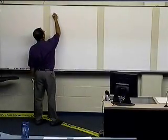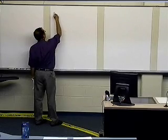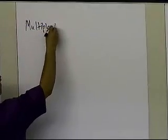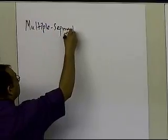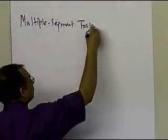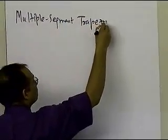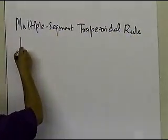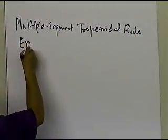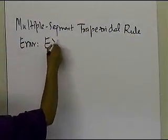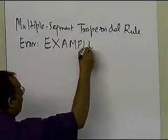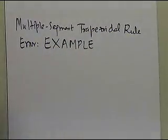In this segment, we're going to take an example for the multiple segment trapezoidal rule error. We're going to take an example and see what it means by looking at the formula for the multiple segment trapezoidal rule.